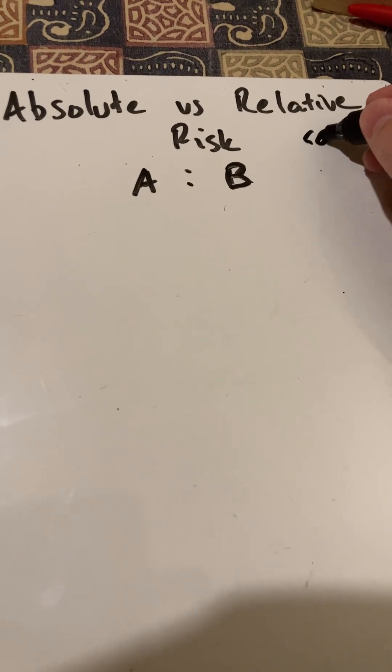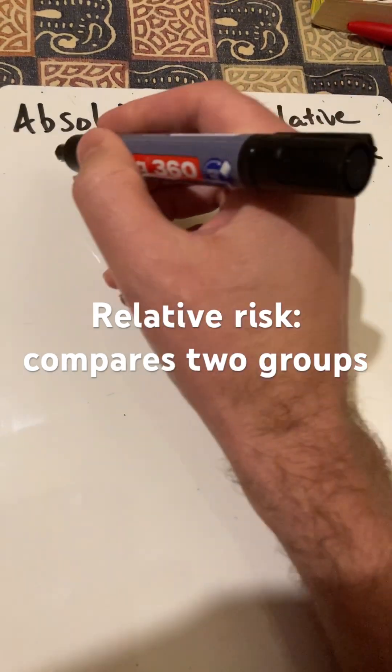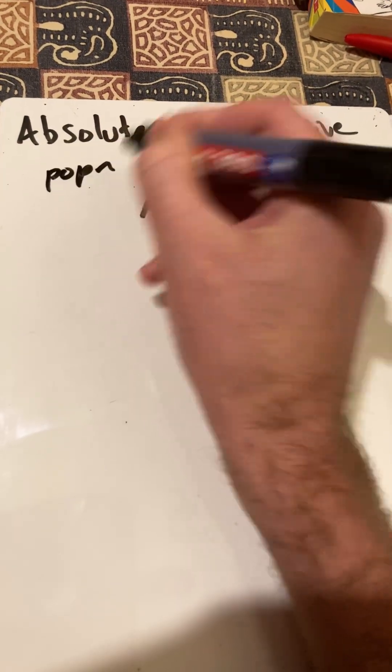Now, relative is when you compare the two risks. Absolute is when you look at them in terms of the population as a whole.